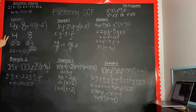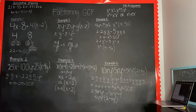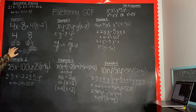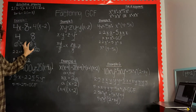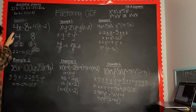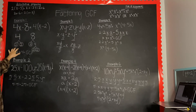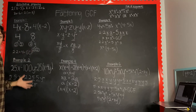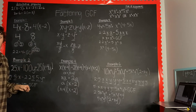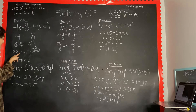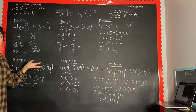I wrote a factor tree for 4 and a factor tree for 8 — this is prime factorization. Once you get all your prime factors, circle them and see which ones are in common. This one has two 2's and this one has three 2's, so the most they could have in common is two 2's.